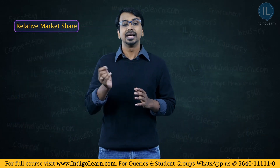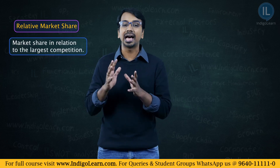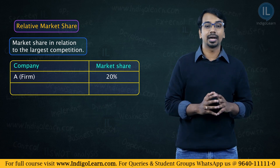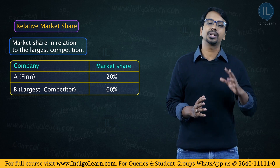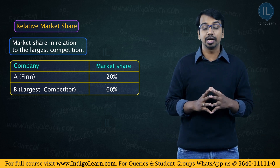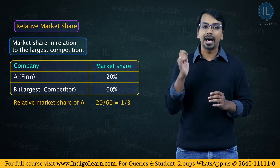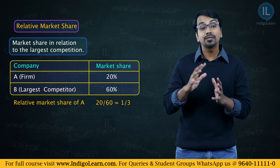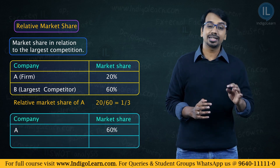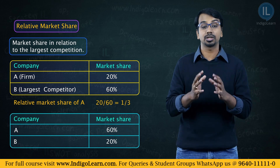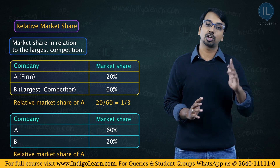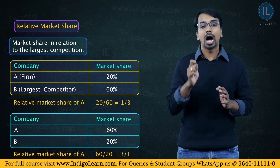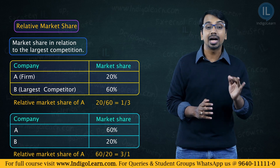Relative market share is the market share in relation to the largest competition. For example, a company has a market share of 20% and the largest company in that market has a market share of 60%. So the relative market share is 2 by 6 — meaning the market share of the company we are considering divided by the market share of the largest competition. This is called relative market share: how much is the company's market share as compared to the largest competition in the market.